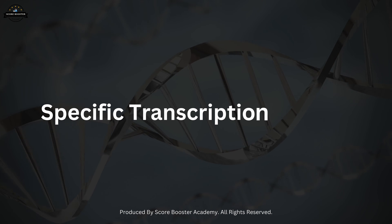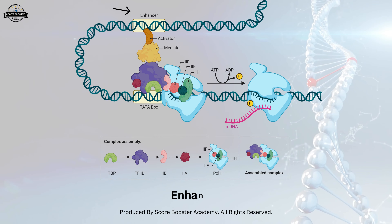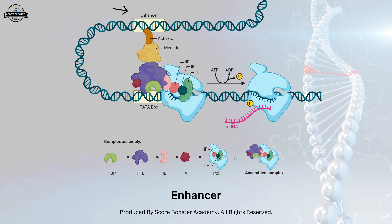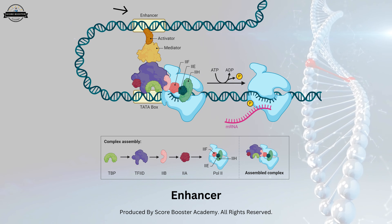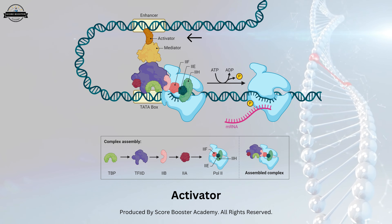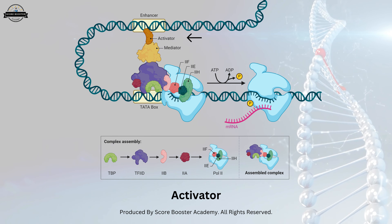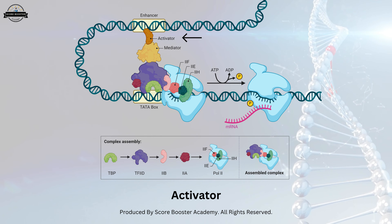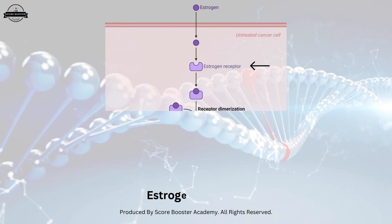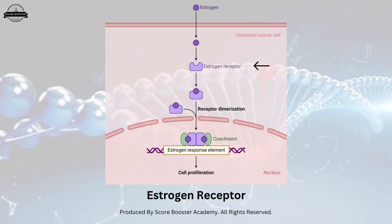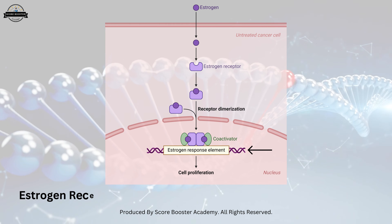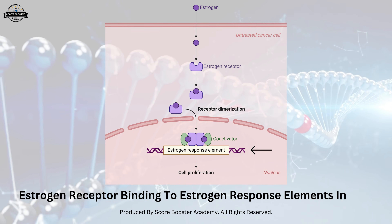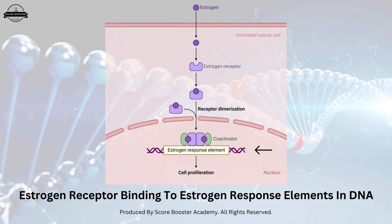Specific transcription factors bind to regulatory elements such as enhancers or silencers to modulate the transcription of specific genes. These factors can act as activators or repressors, depending on their interaction with other proteins and the transcription machinery. An example of a specific transcription factor is the estrogen receptor, which binds to estrogen response elements in the DNA and regulates the expression of genes involved in cell growth and differentiation in response to estrogen.